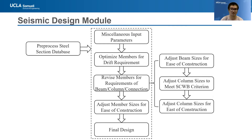This figure shows an overview of the workflow for the seismic design module. A one-time pre-processing of the electronic steel section database is firstly performed. Then the relevant seismic design parameters are received as input and member sizes are adjusted to satisfy the drift requirement. Subsequently, the beams, columns, and connections are checked to ensure that they satisfy the relevant strength and detailing requirements. Lastly, the member sizes are adjusted to account for the ease of construction and the final design is generated.